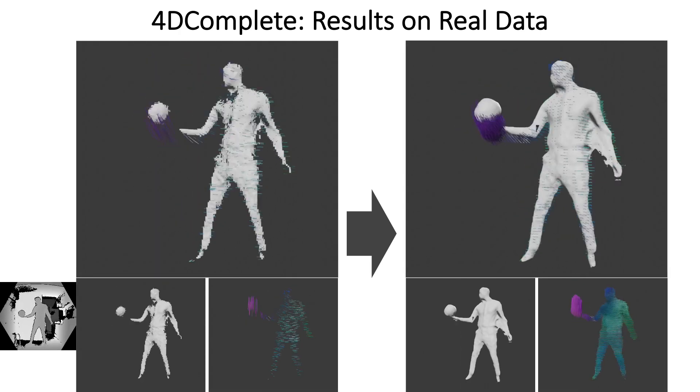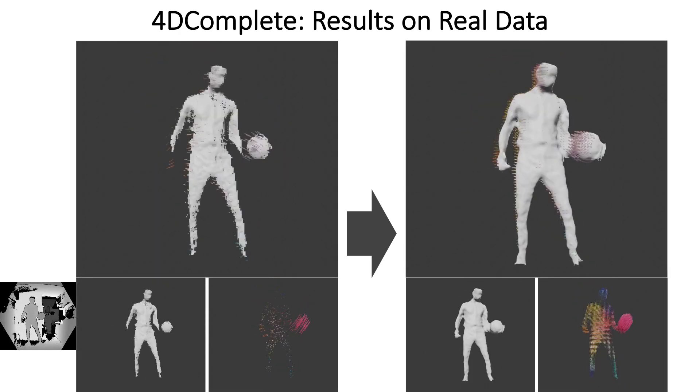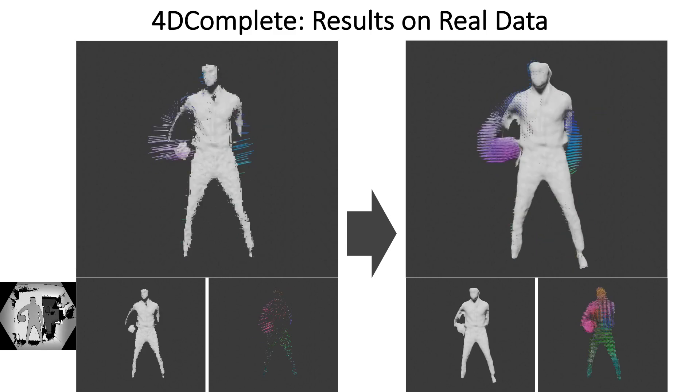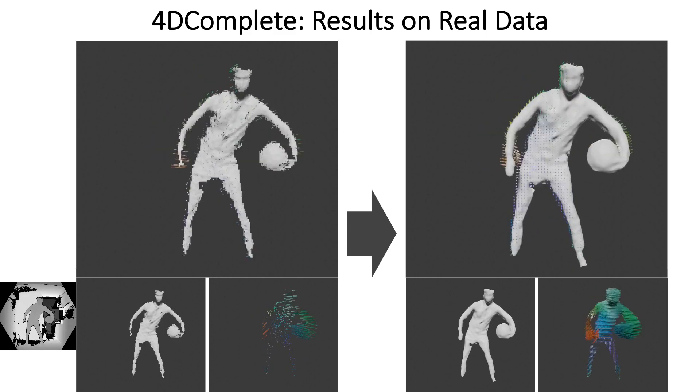Here we show results from a man playing basketball. The sequence is captured by a Kinect camera, as shown in the bottom left corner.